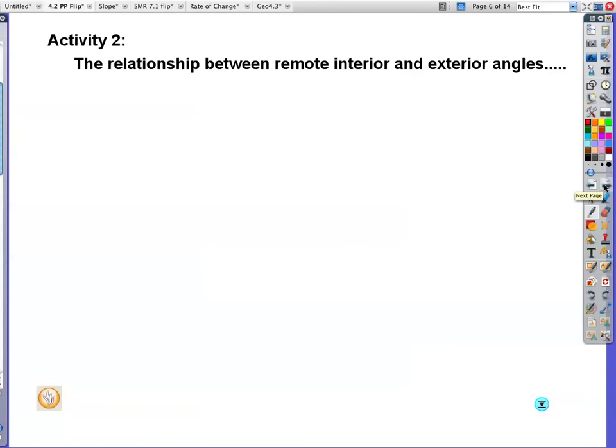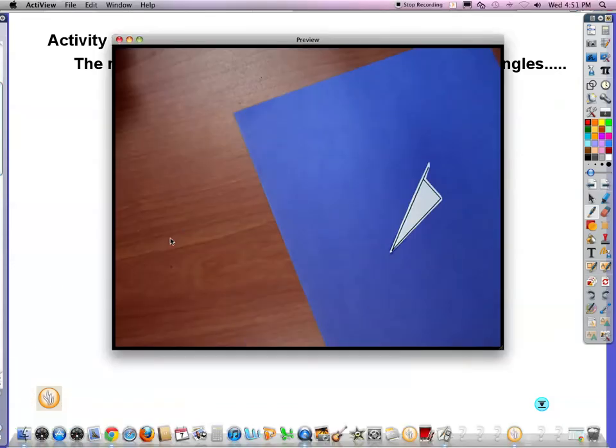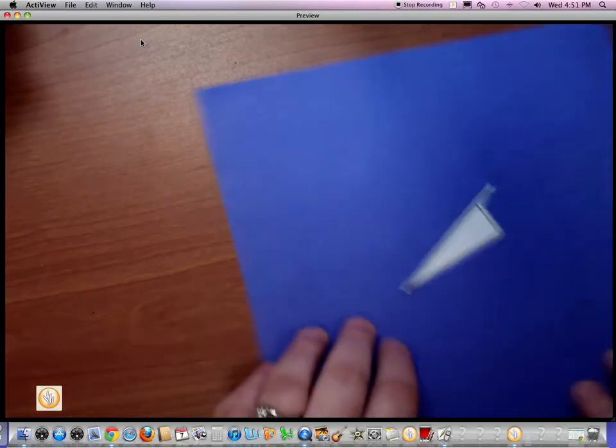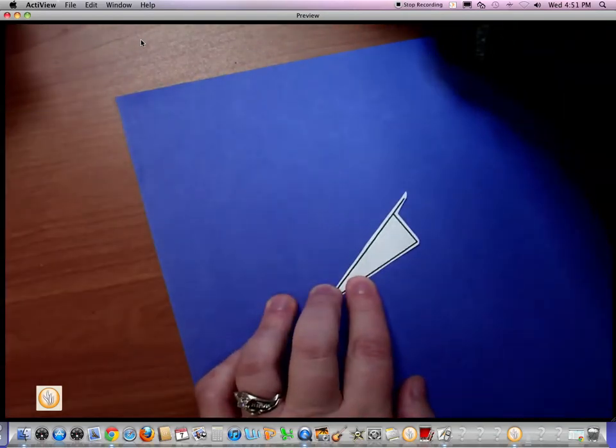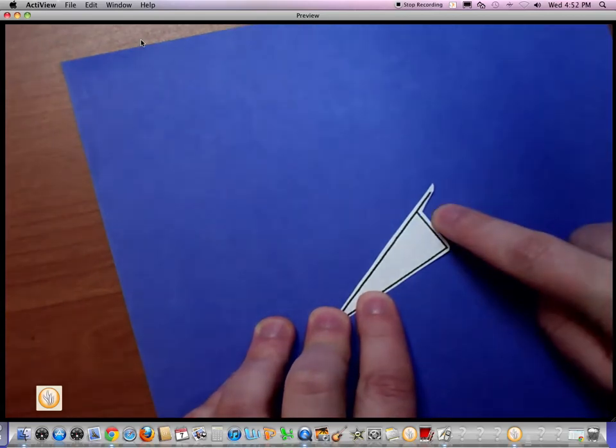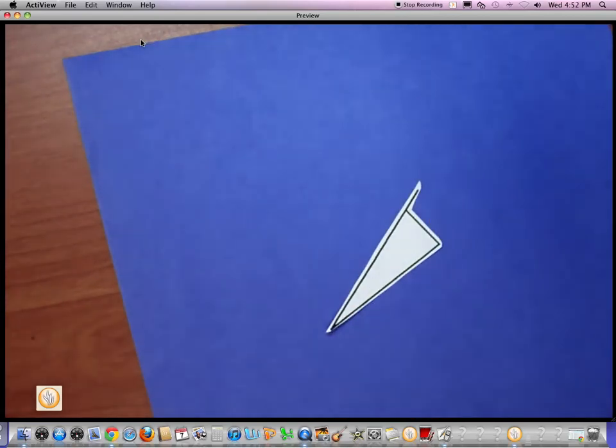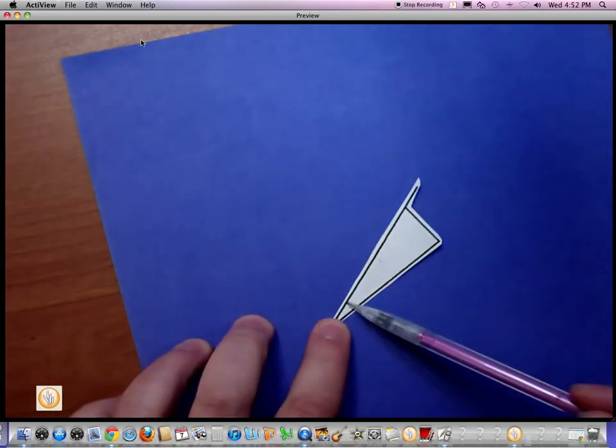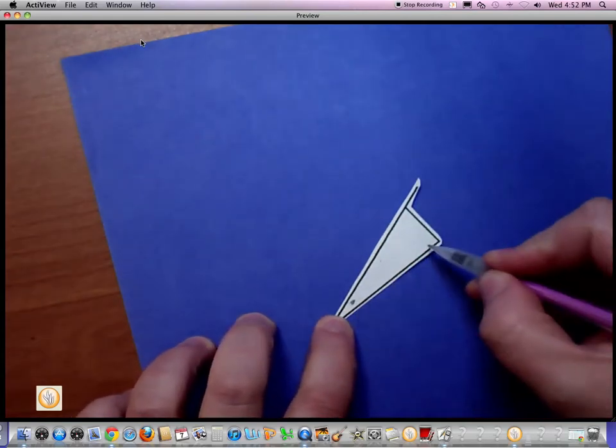Activity two. The relationship between a remote interior angle and the exterior angle. Sorry. I'm not thinking about what I'm saying here. I'm thinking about getting the screen up for you. So let's look. Let me zoom in just a little bit here so we can look. So I cut out this angle. It's got the exterior angle over here. And I've got the remote interior is right here. And here's my other remote interior.